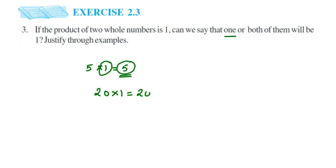So from here it's very clear that if you want to get 1 as your answer after multiplying two whole numbers, it means both numbers have to be equal to 1, because 1×1 is going to give you 1.